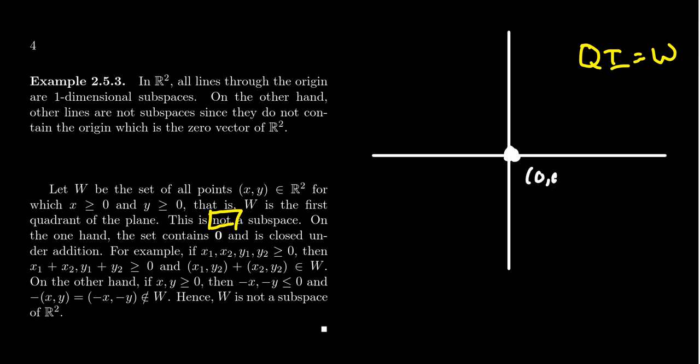If you take the vector (0,0), notice by definition here, the X coordinate has to be non-negative. Zero is okay. And the Y coordinate likewise has to be non-negative. So, if you take zero and zero as your X and Y coordinates, these inequalities are satisfied. So, it does pass the first test. We have these three conditions.